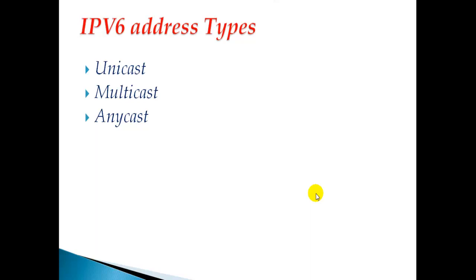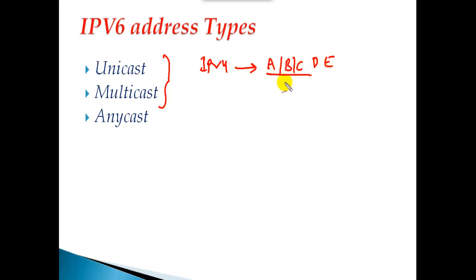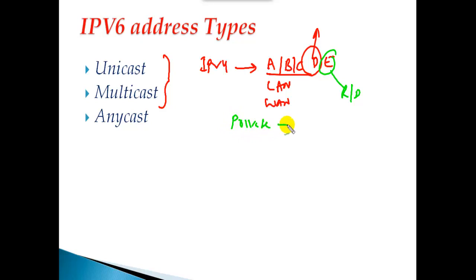IPv6 address types. In this section we'll continue with IPv6 and see the different categories of addresses. Like in IPv4 we have categories of A, B, C, D, and E class — where we use A, B, C for LAN and WAN purposes, class D is for multicasting, and class E is for R&D. We also have private IP addresses used within an organization but not recognized on the internet, and public IP addresses which are globally unique and used to send traffic on the internet.